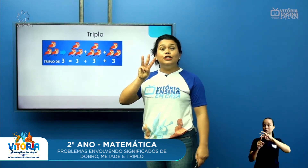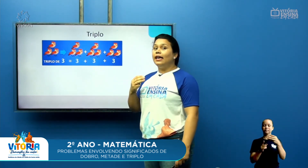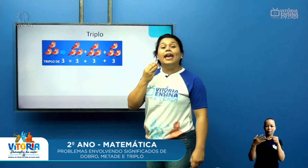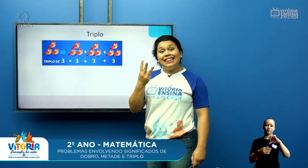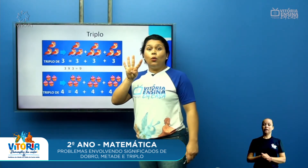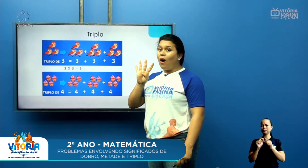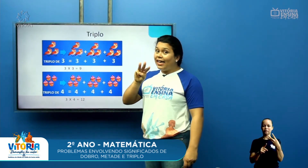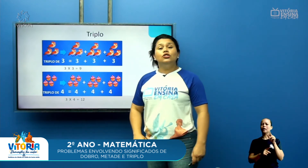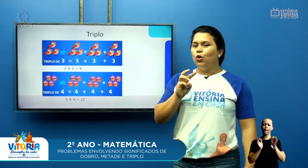O triplo de três é três mais três mais três, que é quanto? Isso é nove. O triplo de três é três vezes três. E o último: o triplo de quatro é quatro mais quatro mais quatro. Ou seja, três vezes quatro. O triplo de quatro é três vezes quatro, que é doze. É ótimo trabalhar com o dobro e com o triplo.